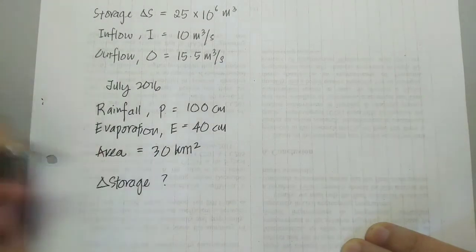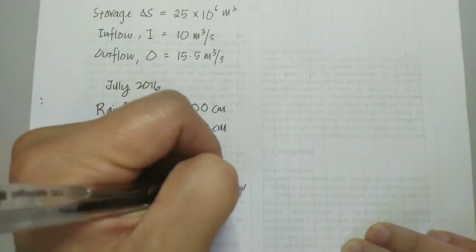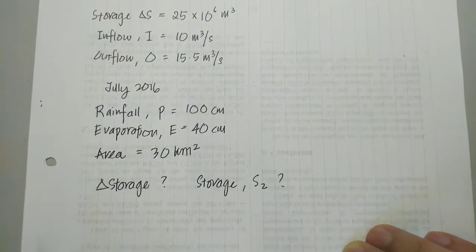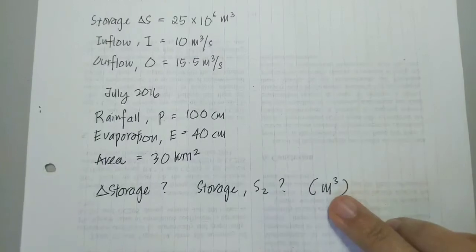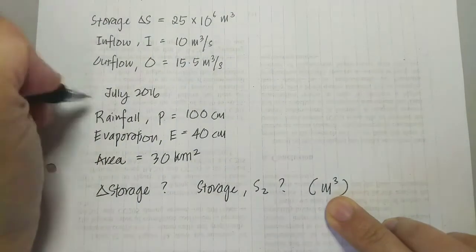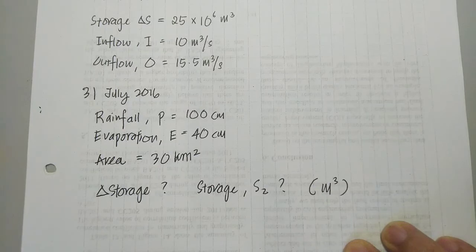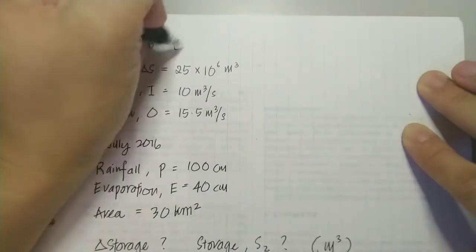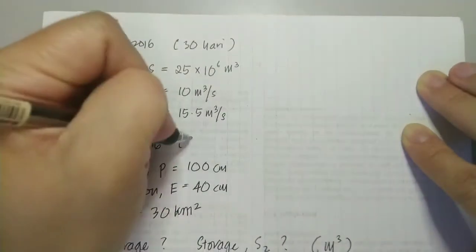We need to find the change of storage and the new storage value, with required units in meter cube, at the end of July. Assume there is no contribution to or from groundwater storage. July has 31 days, so we note it is 31 days.